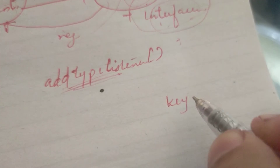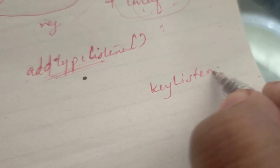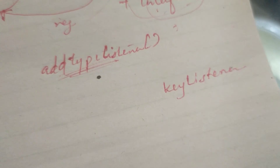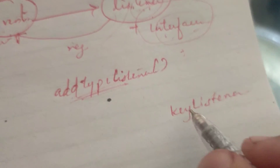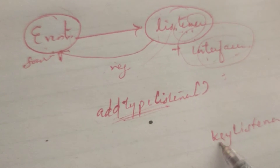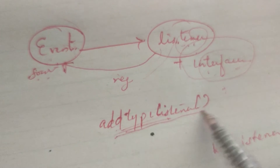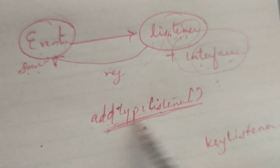If the key event is added, we have to handle the key listener. The key listener will register as the name of the listener. For the key event, it will register using addTypeListener — for example, addKeyListener.